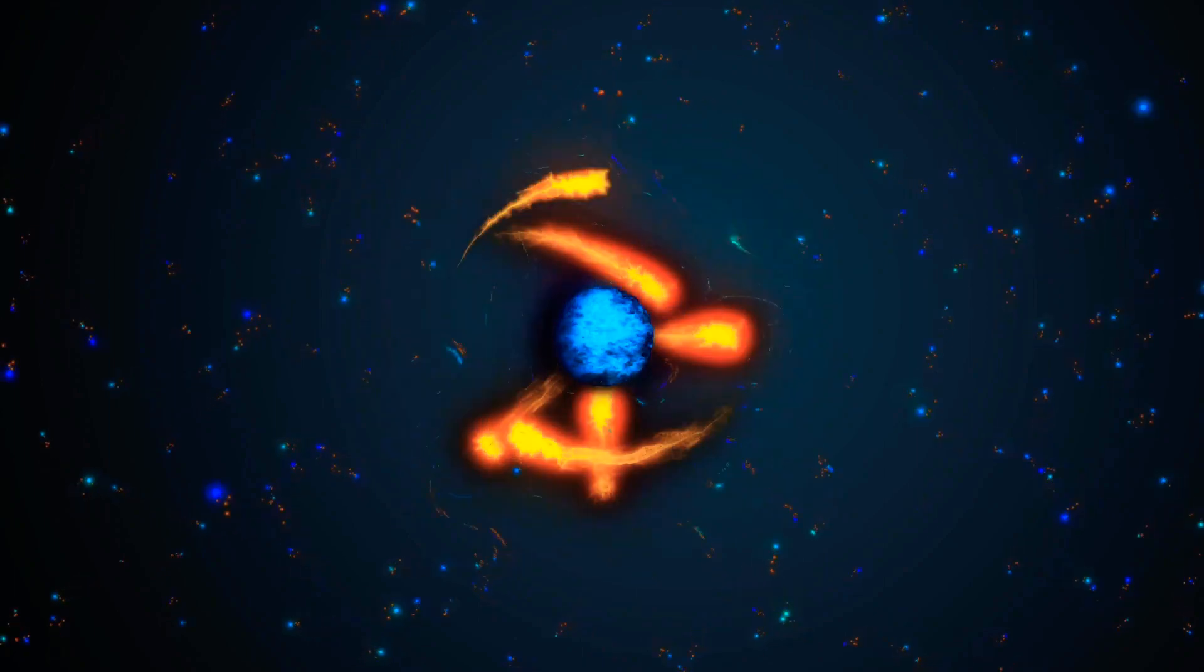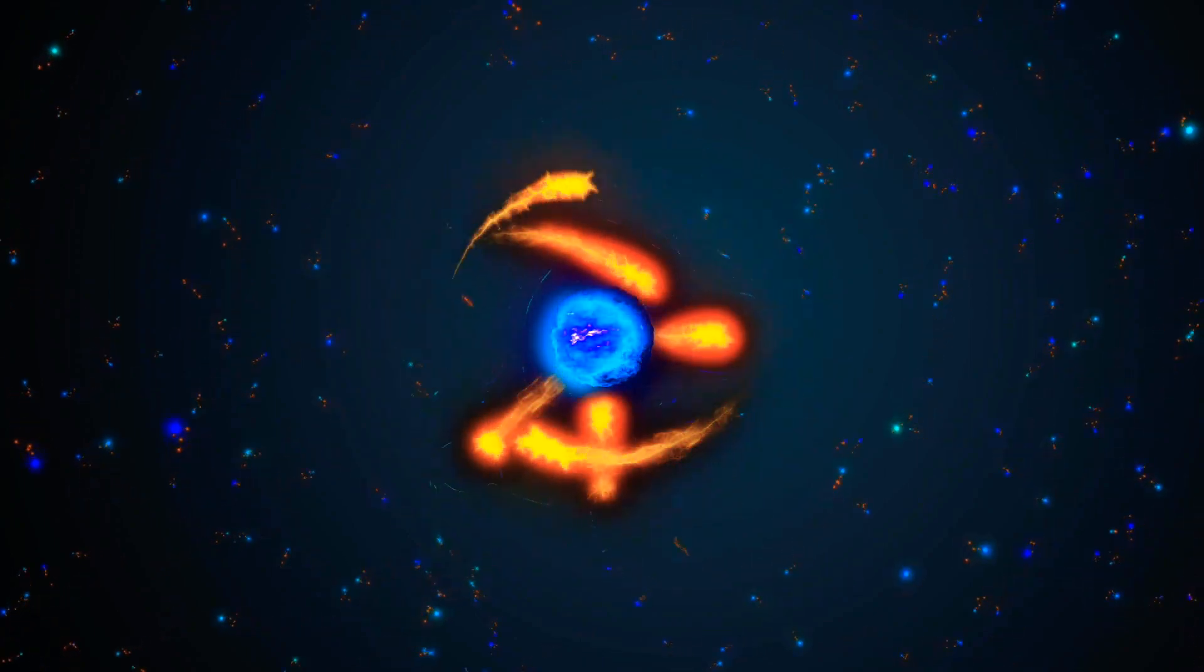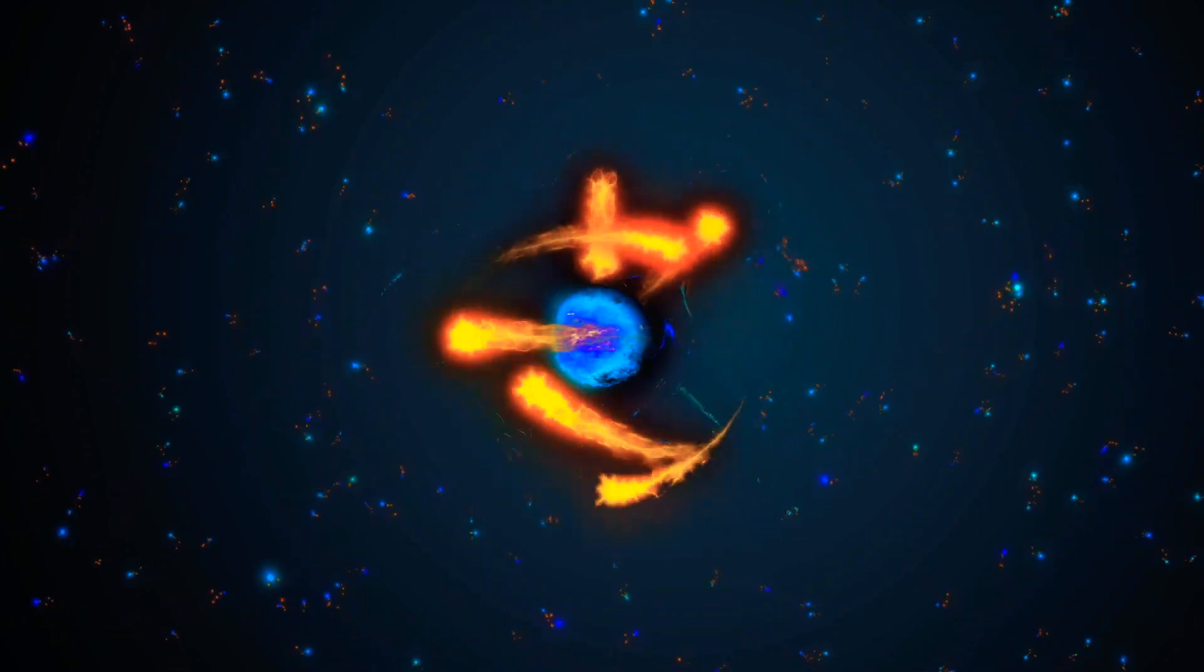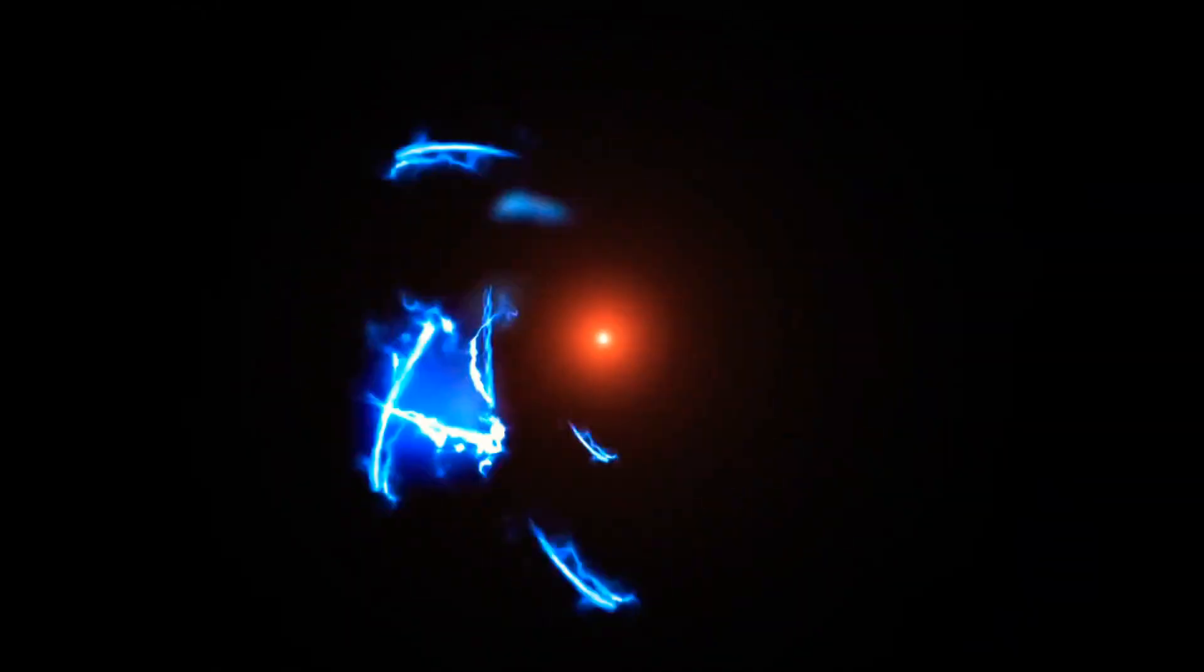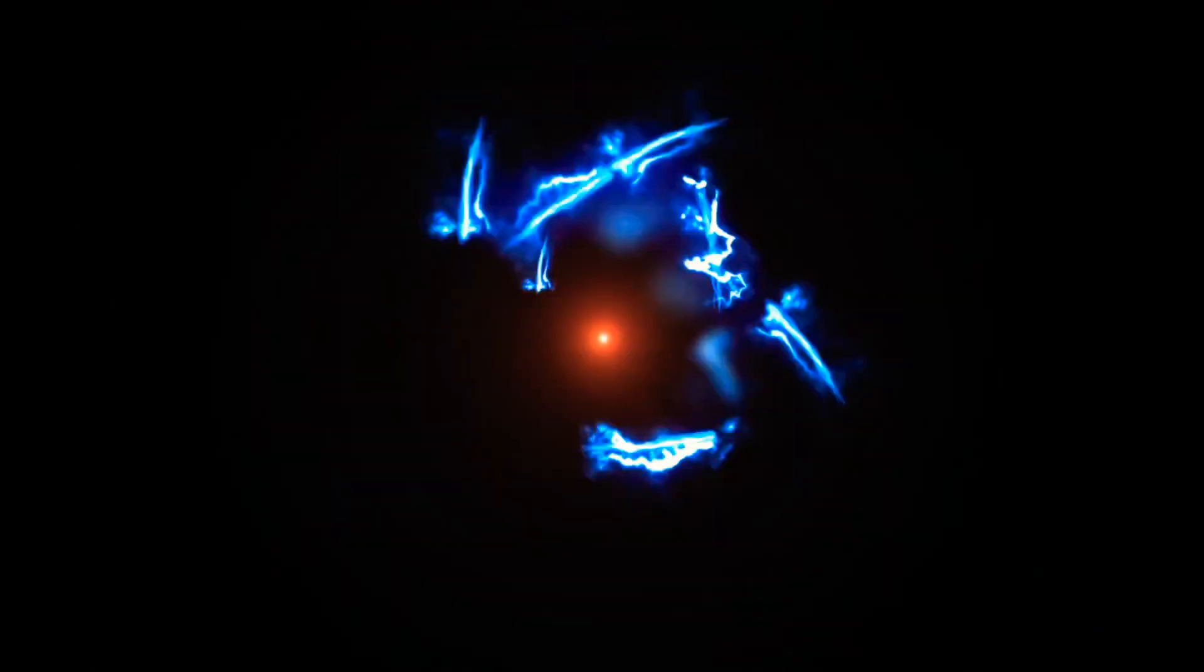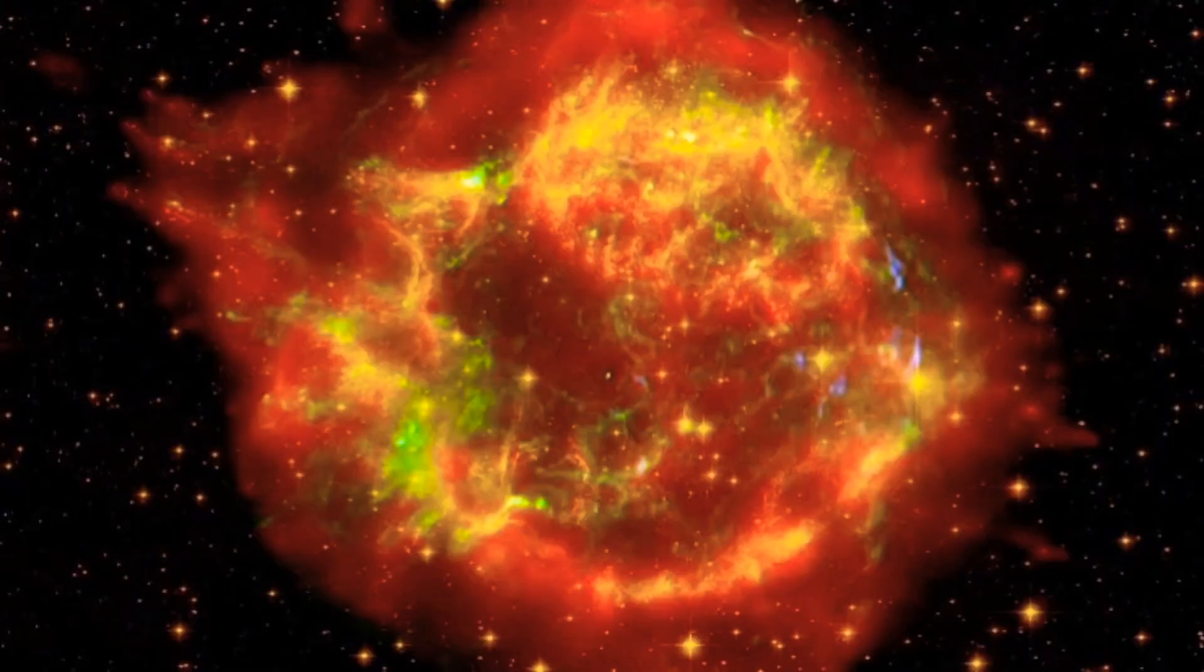Stars are fusion engines creating heavier elements inside their cauldrons, but Przybylski's star is cooking up the kinds of elements we don't normally see in stars, including uranium. This star seems to form only heavier elements, the kind of stuff seen in violent events like supernovae.